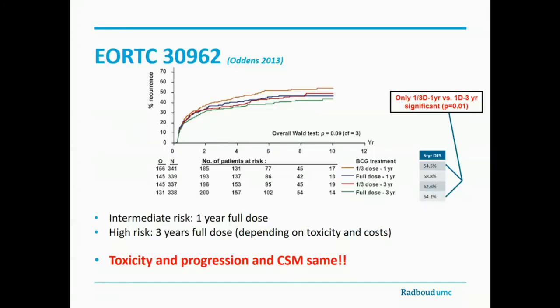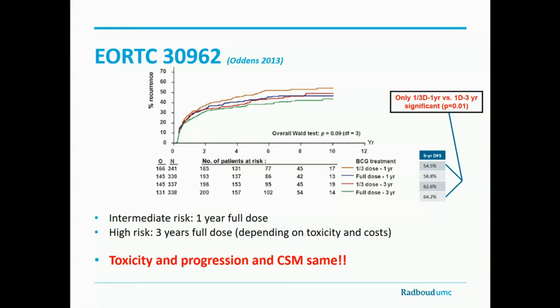What to do if there's not enough BCG? A large EORTC trial with 1,500 patients compared four regimens: one-third dose for one year, full dose for one year, one-third dose for three years, and full dose for three years. Toxicity and progression were exactly the same across all arms. There is a difference in recurrence rate — the more you give, the lower the recurrence — but the difference between the least and most intensive regimens is only about a 10% higher recurrence rate. So safe options include: one year of maintenance instead of three, two instead of three instillations during maintenance, or one-third dose during maintenance. For CIS specifically, full dose should be given during the first year.